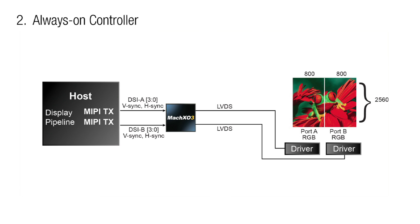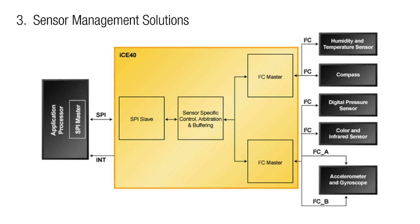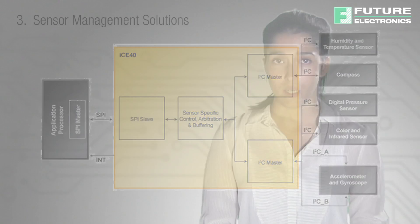Lattice FPGAs include integrated oscillators and PLLs that can be used to implement other custom features on demand. For sensor management solutions, Lattice FPGAs allow you to create dedicated I2C ports for high-bandwidth critical sensors. Interface to the application processor using a lower power, higher bandwidth SPI interface. Poll sensors in low power while the application processor is in sleep mode, and enable customizable buffer polling schemes based on your specific needs.